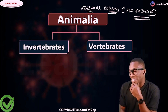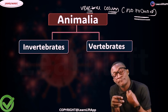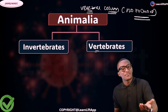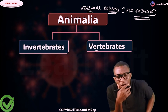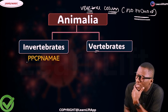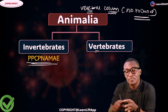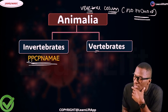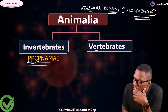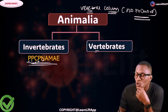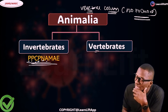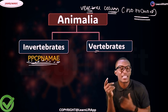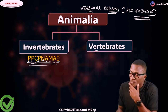Based on the notochord, we have two types: invertebrates, which lack the notochord and lack backbone, and vertebrates, which have it. Under the invertebrates we use the mnemonic PCP NAMIA. The first P is Protozoa, the second P is Porifera, C is Coelenterata, P is Platyhelminthes, N is Nematoda, A is Annelida, M is Mollusca, I is Arthropoda, and A is Echinodermata — PCP NAMIA.